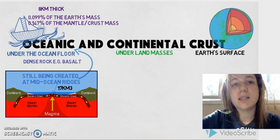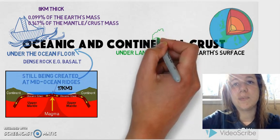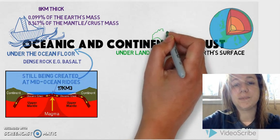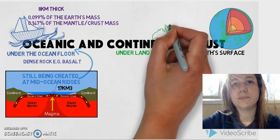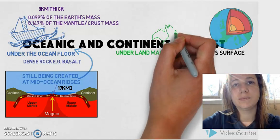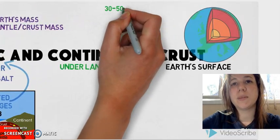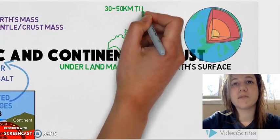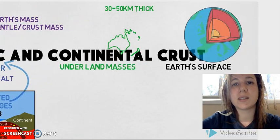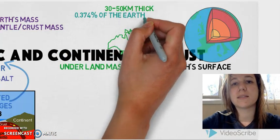Continental crust is that which is underneath the land mass. It's approximately 30 to 50km thick and accounts for 0.374% of the Earth's mass.